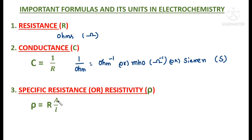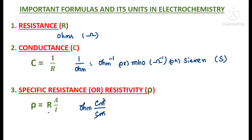To find the unit for specific resistance: ρ = R × A / L. The unit for resistance is ohm, for area it is centimeter square, and for length it is centimeter. Simplifying: ohm × cm² / cm = ohm·cm. So the unit for specific resistance is ohm·centimeter.